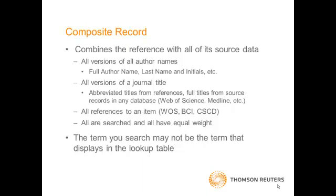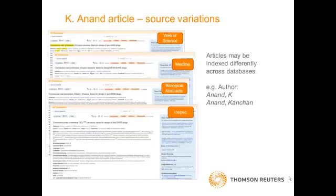There are occasions when your search term may appear in the composite record, but another version may display when it is presented in the cited reference lookup table. The composite record for a NONS article in Science combines data from all its versions, including Web of Science, Medline, Biological Abstracts, and InSpec.